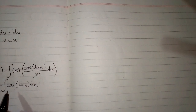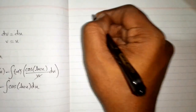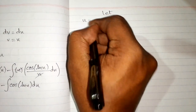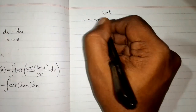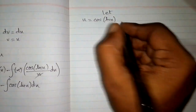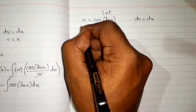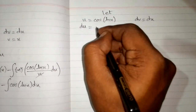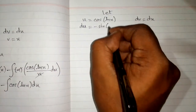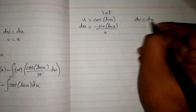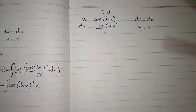Now we integrate cosine of ln of x separately using integration by parts again. Let u equal cosine of ln of x and dv equal dx. Then du equals minus sin of ln of x upon x dx, and integrating gives v equal to x.